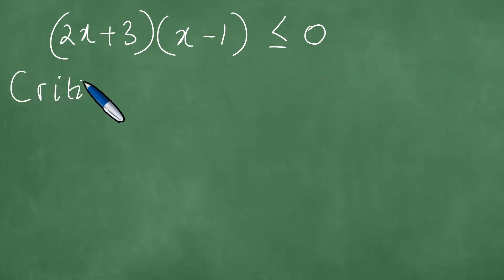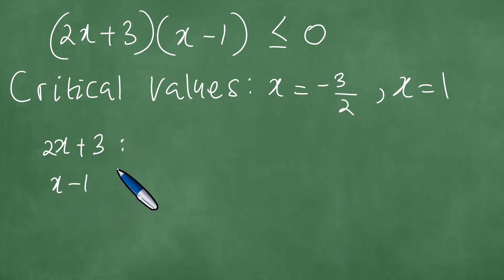At this point, we have what we call the critical values. The critical values are x = -3/2 and x = 1. What do we do with these critical values? We put them step by step on the real line and position them. First, we position 2x+3, then we position x-1, and then we draw a horizontal line, which is the number line of the values of x. We put here -3/2, and we put here 1.